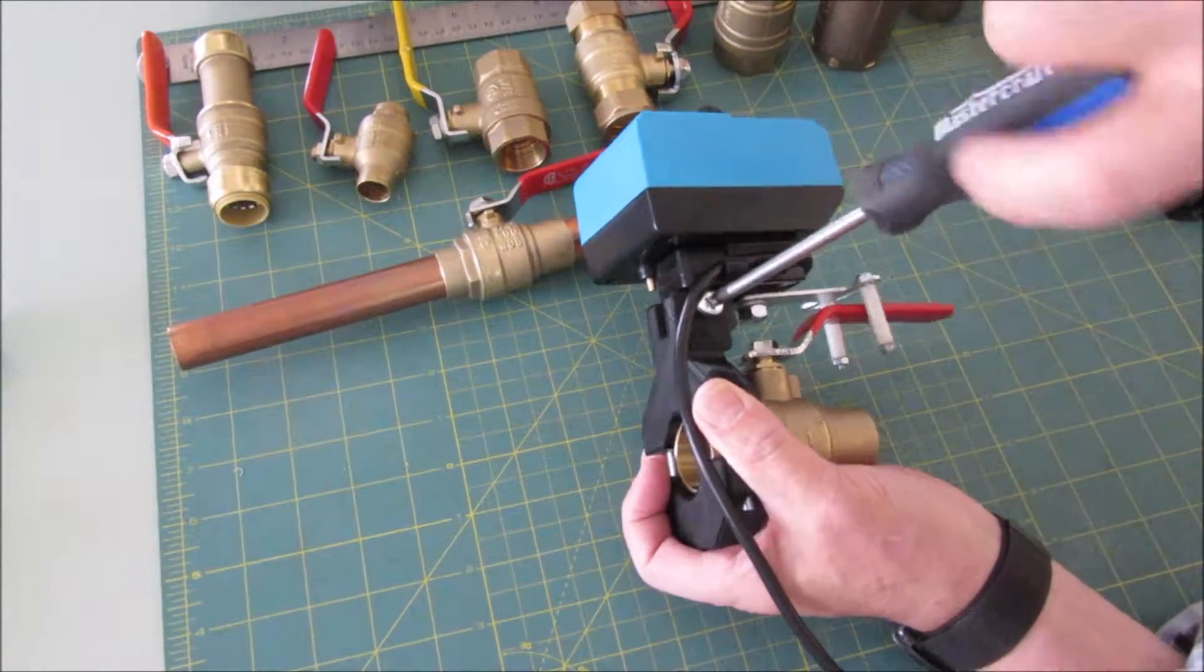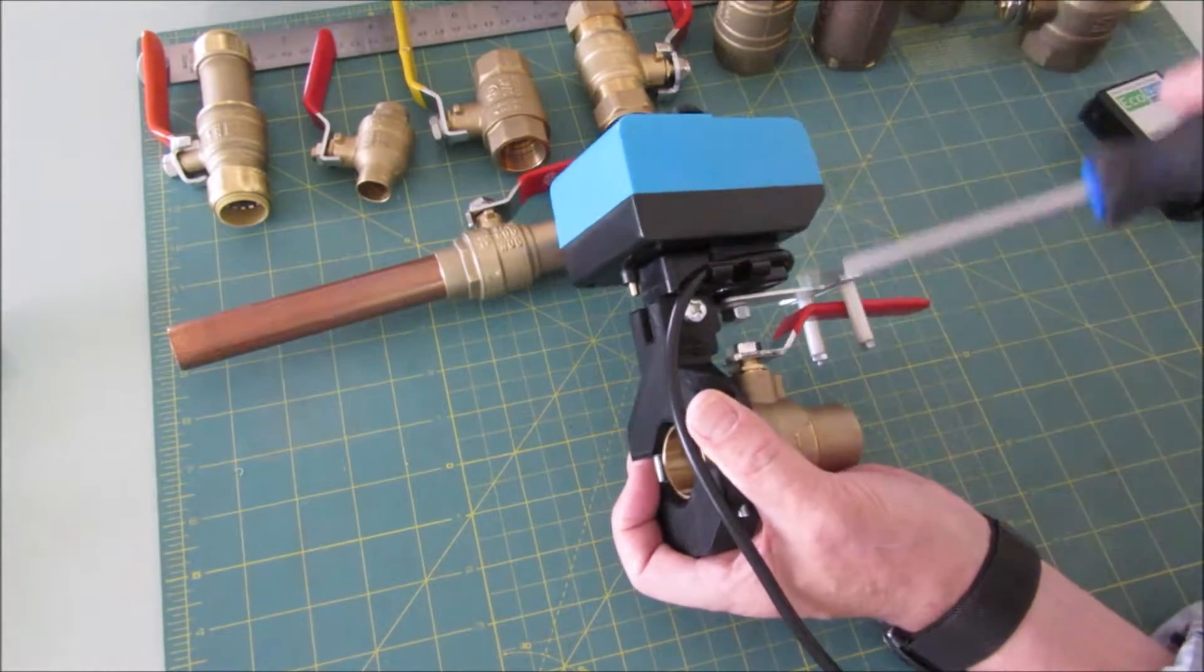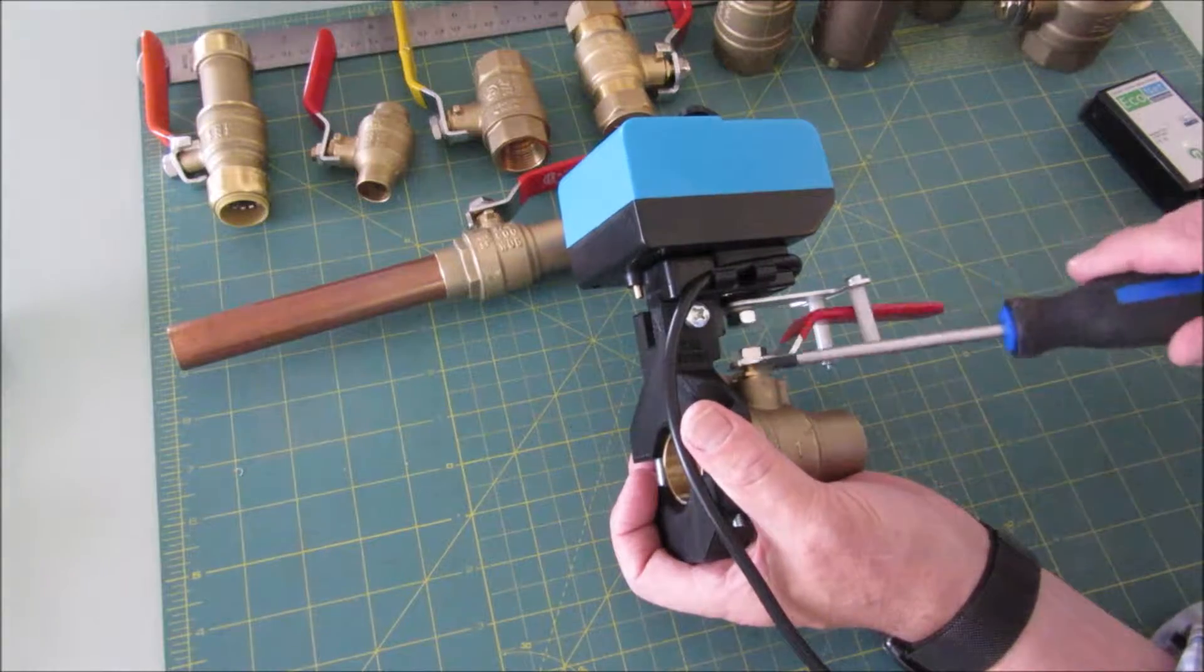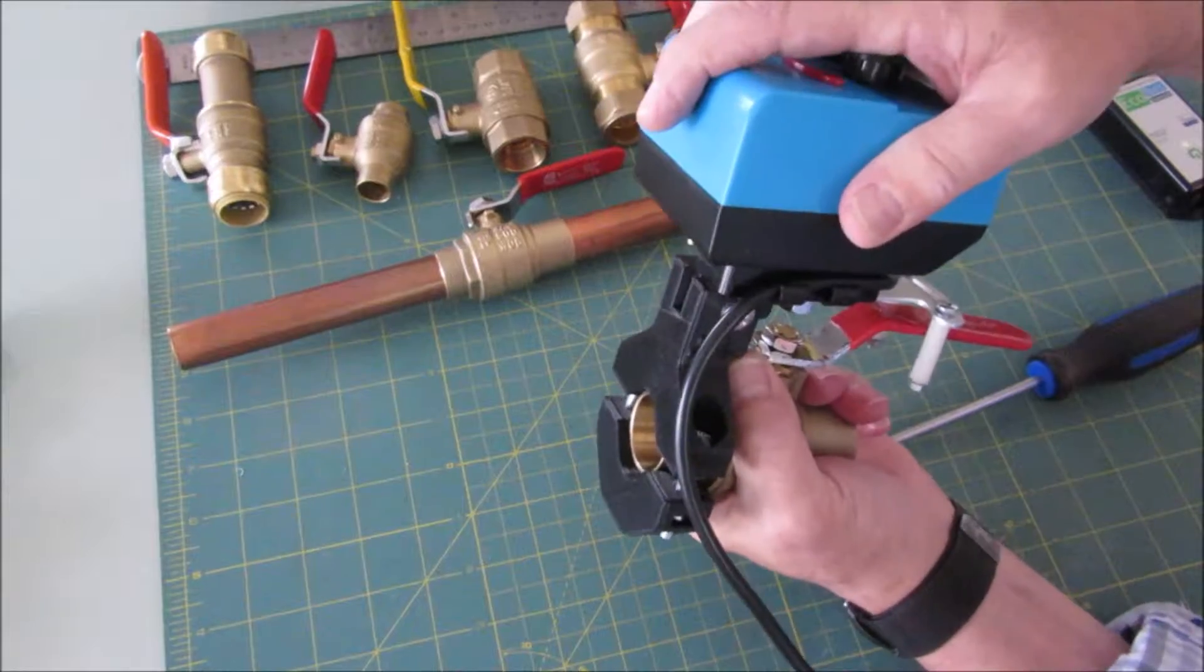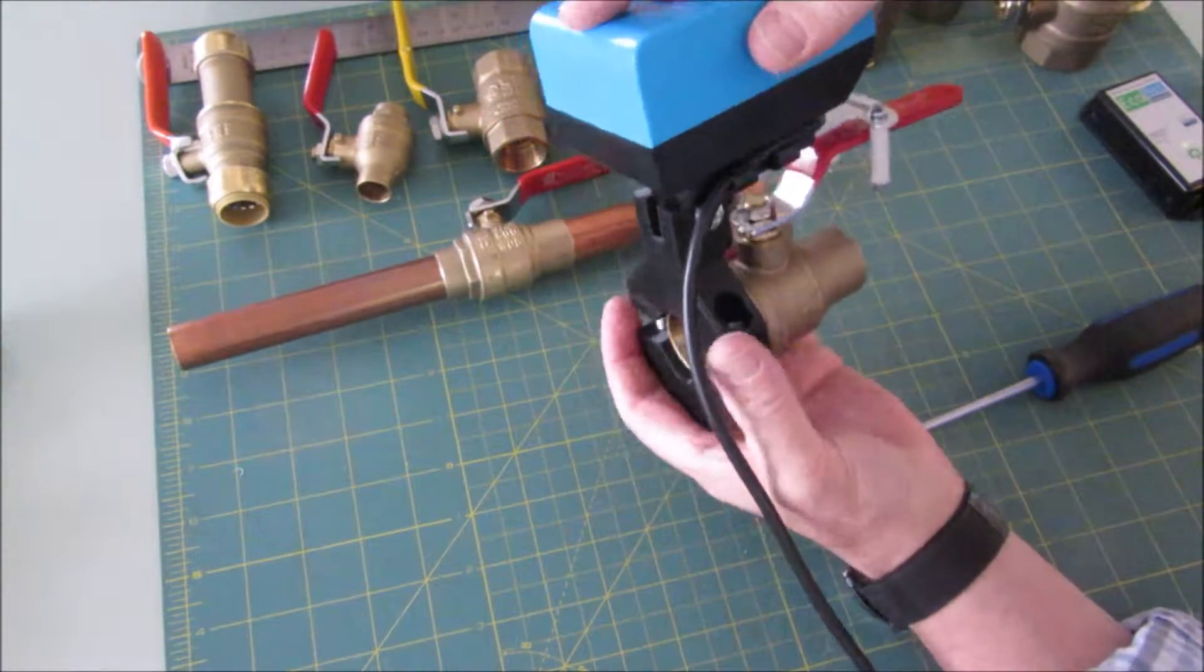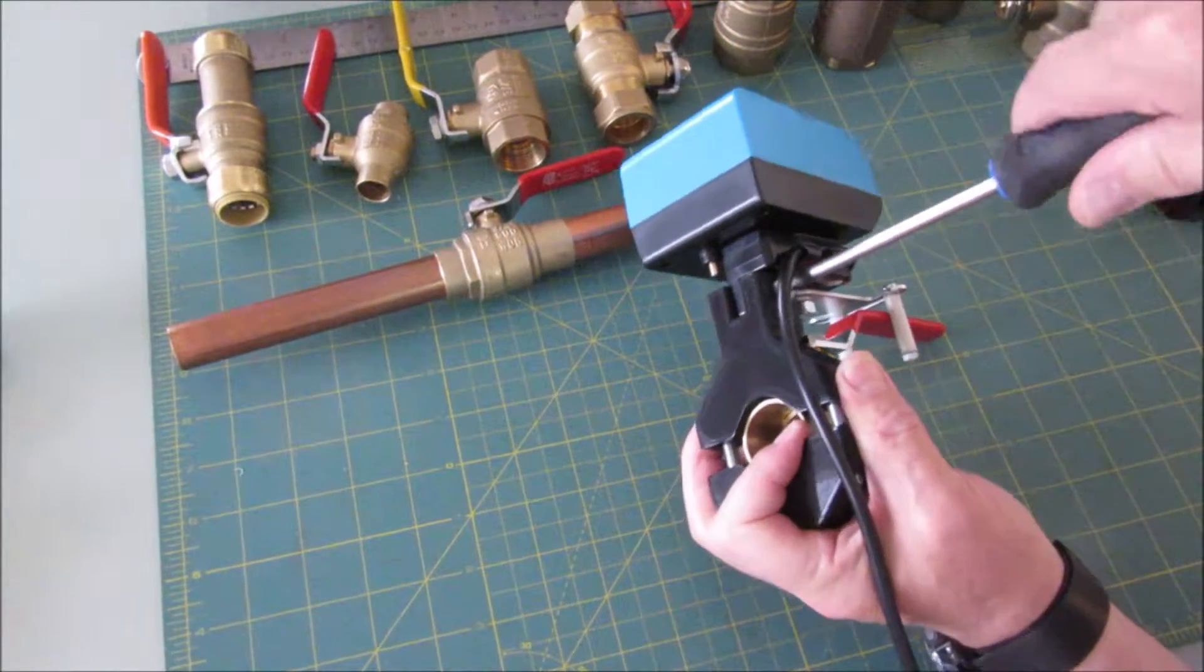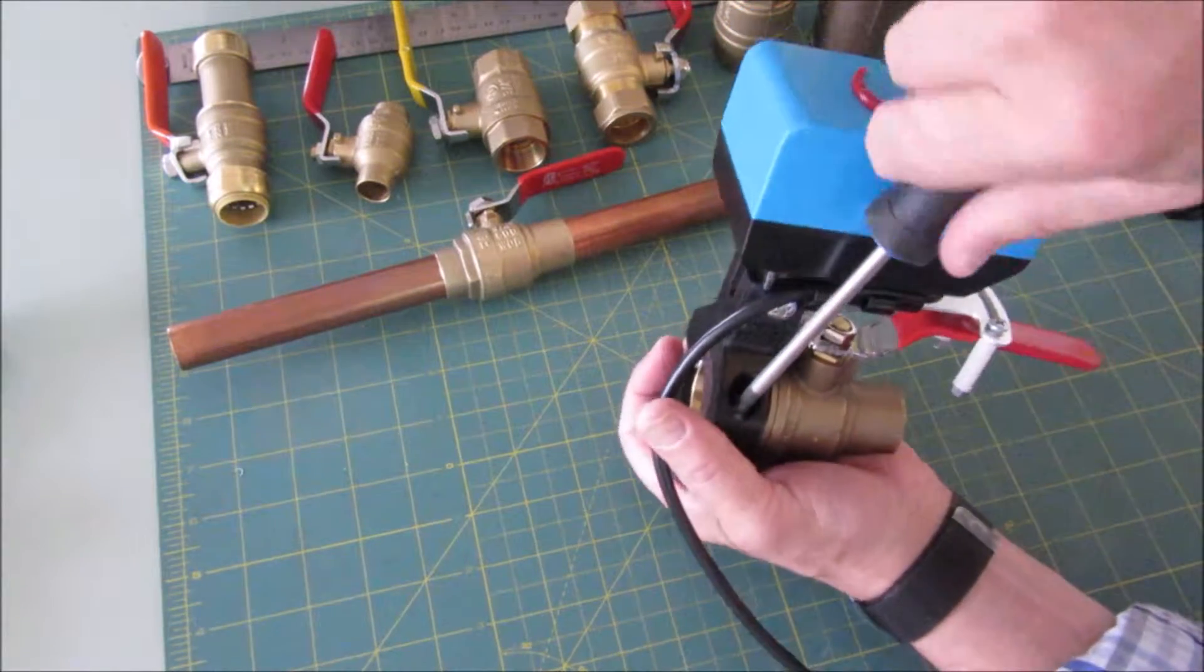Before I completely tighten it, I'm going to just check the alignment again. The pivot point should be centered and even. So I'm going to just make sure that it is. That looks pretty good. So now tighten this one up a little bit more. I'm going to tighten the two sides up, everything else looks pretty good.